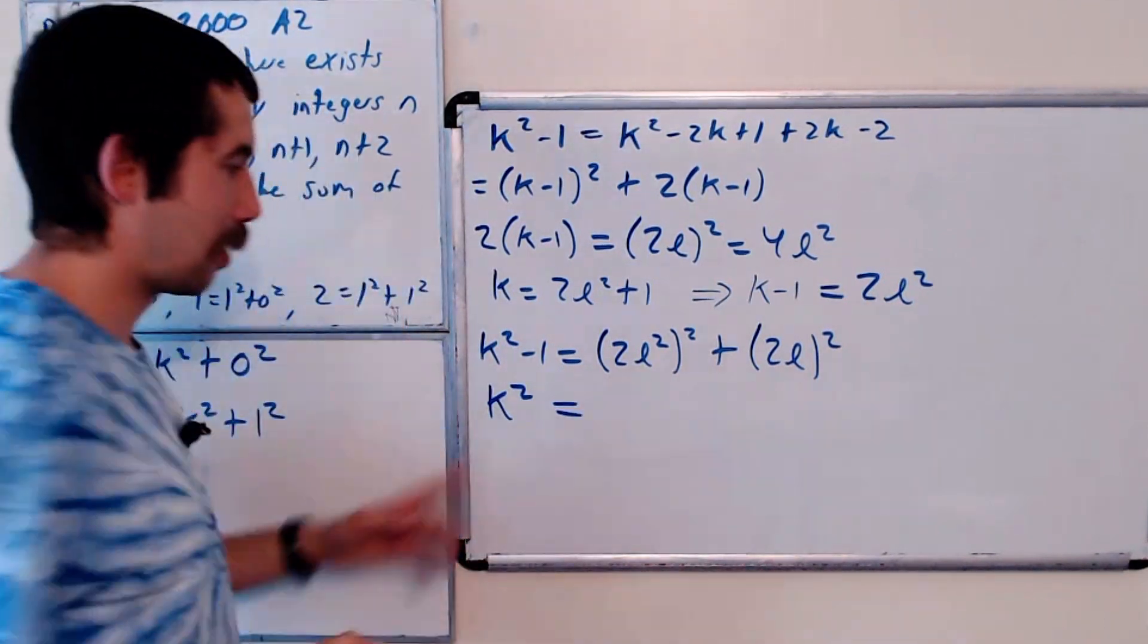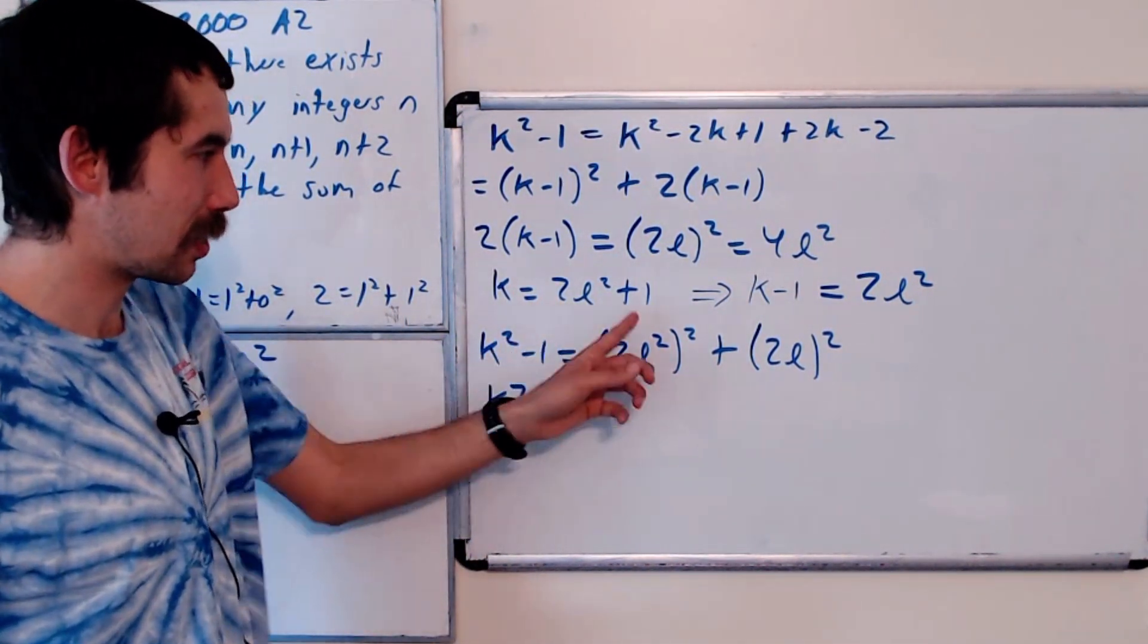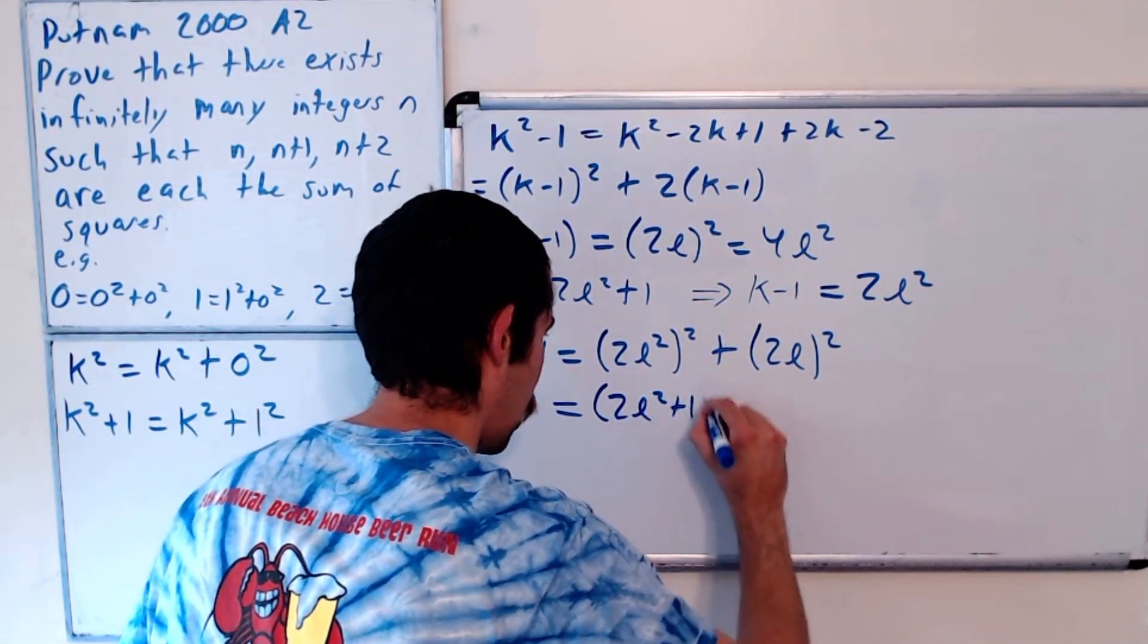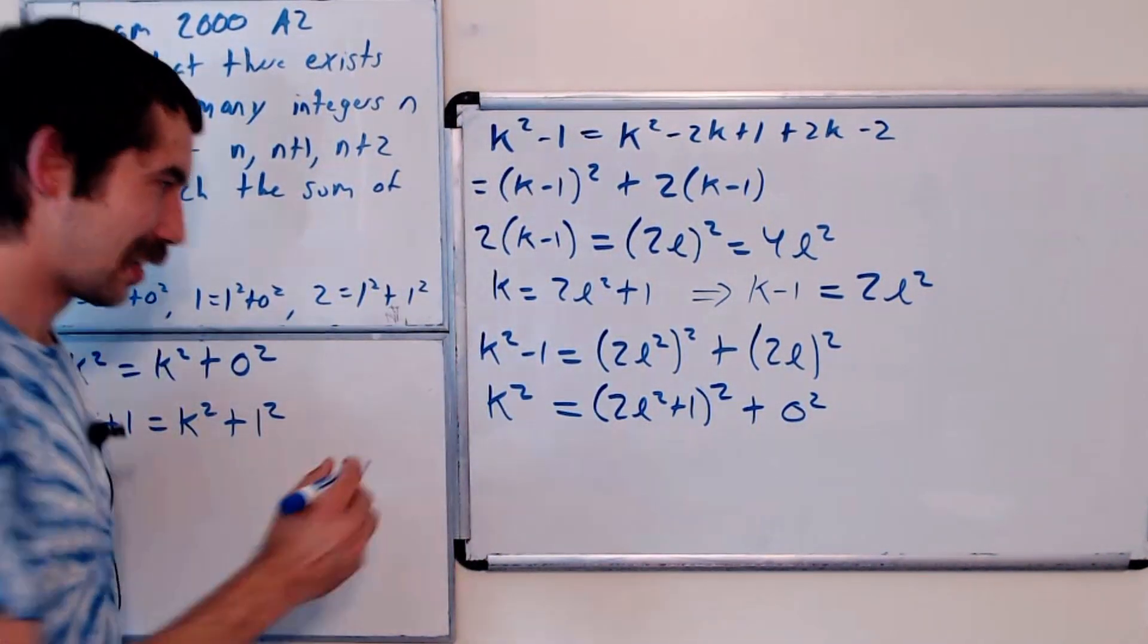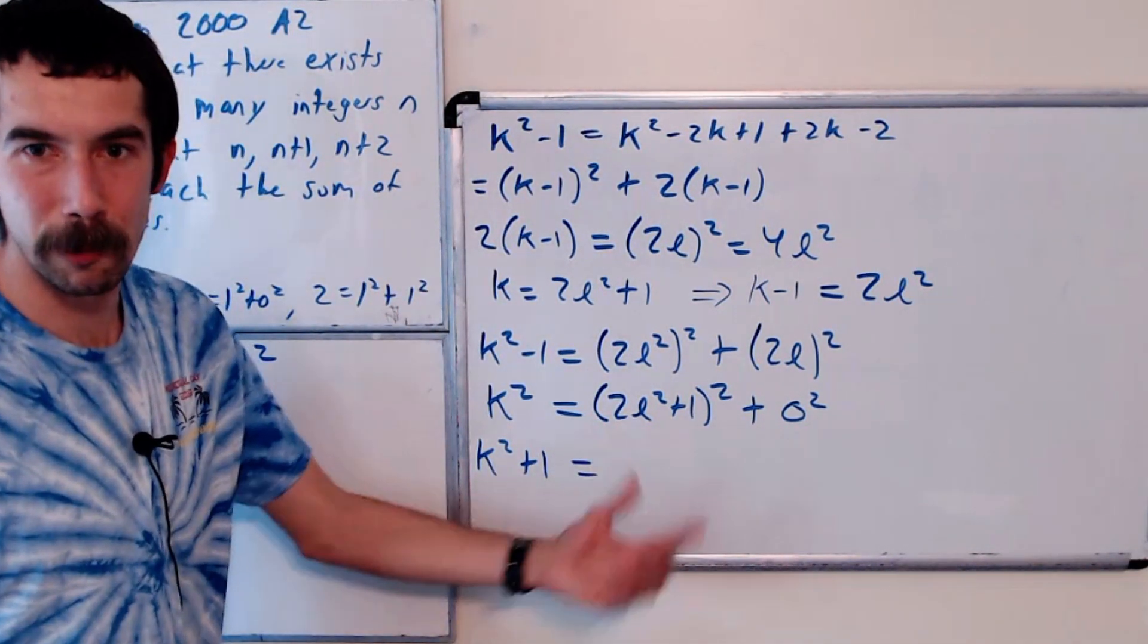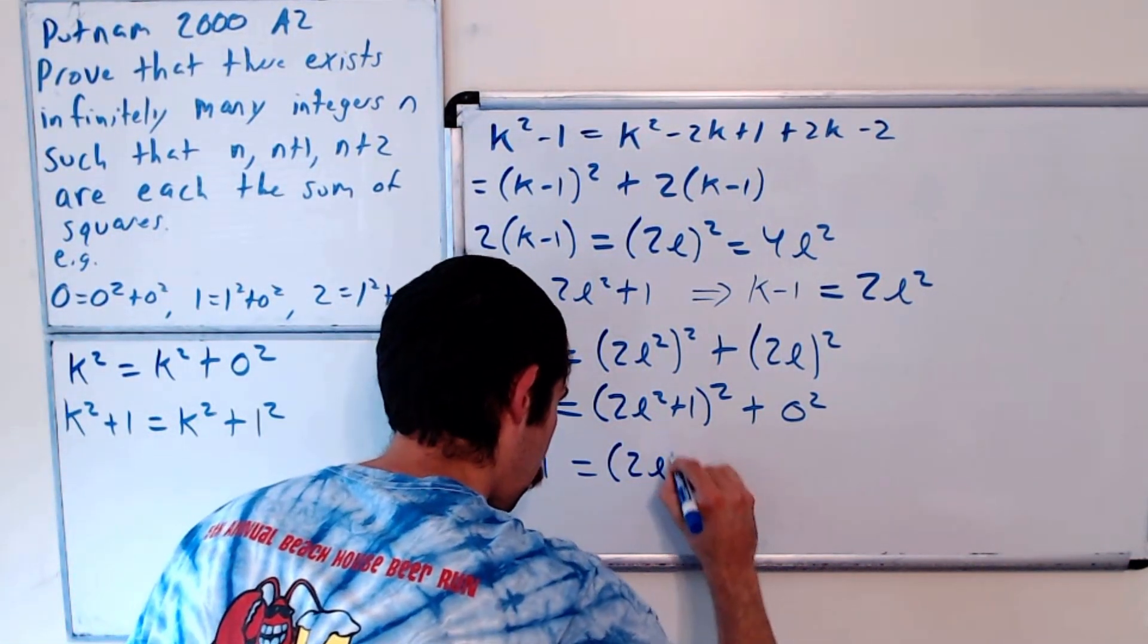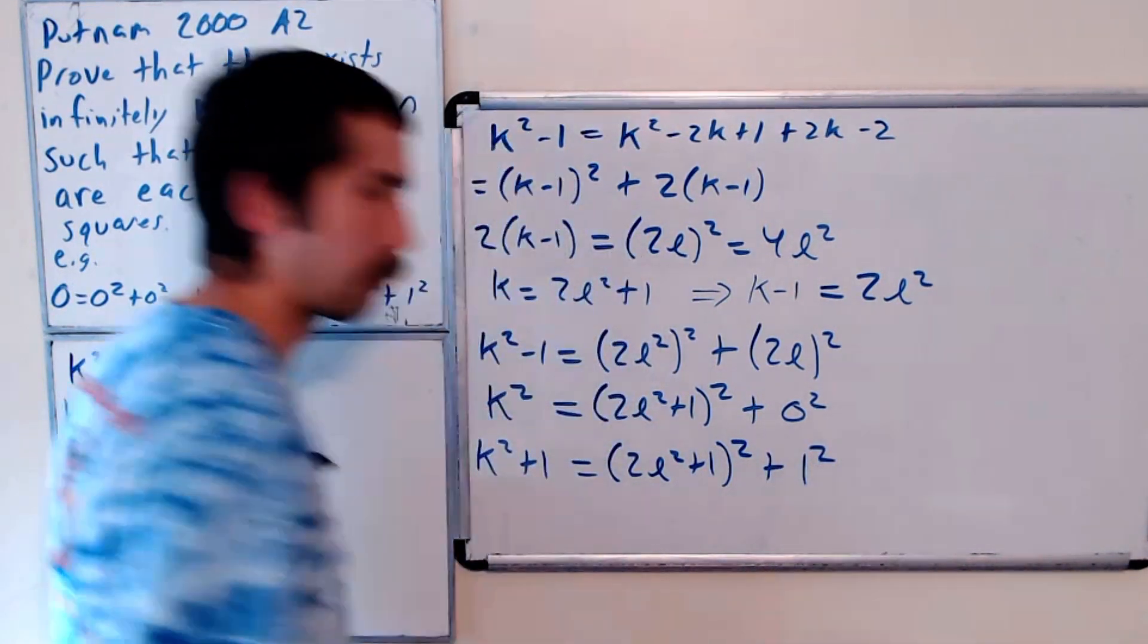k squared, well, that's just k squared plus 0 squared, but let's write it in terms of l. 2l squared plus 1 squared plus 0 squared. And k squared plus 1 is equal to 2l squared plus 1 squared plus 1 squared.